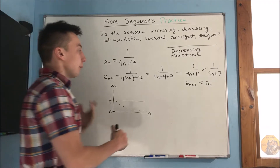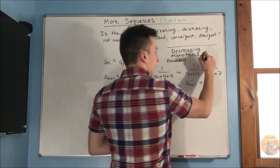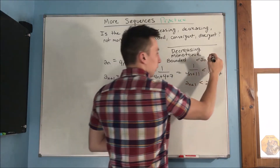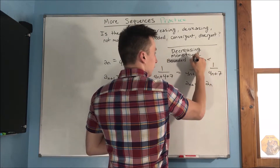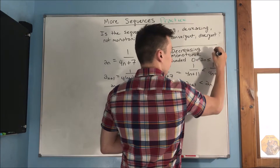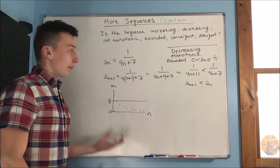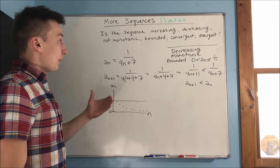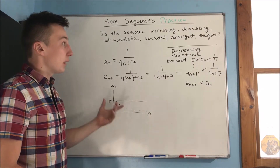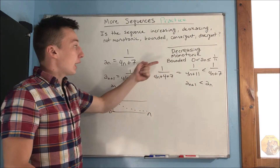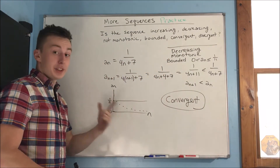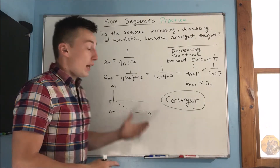The minimum value: the sequence is bounded below by a sub n equals zero — it's never going to touch zero, but it's always greater than zero. So we can write: zero is less than a sub n, which is less than or equal to one over eleven. It is bounded. And using the Monotonic Sequence Theorem, since it's both monotonic and bounded, it must be convergent. Looking at the graph, you can see it converges to zero.